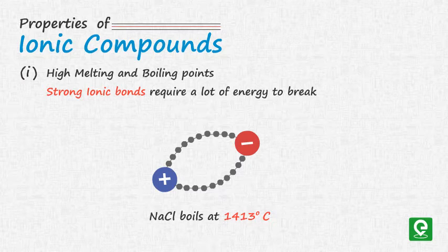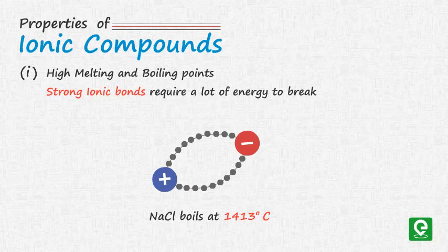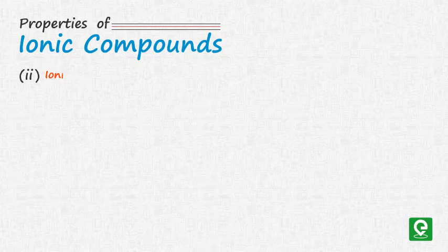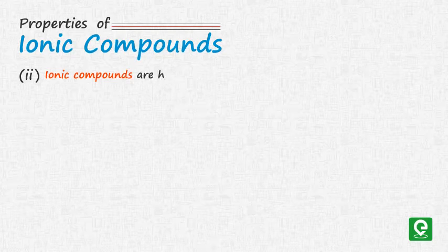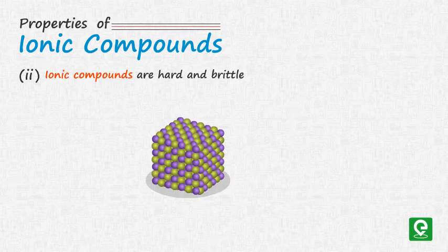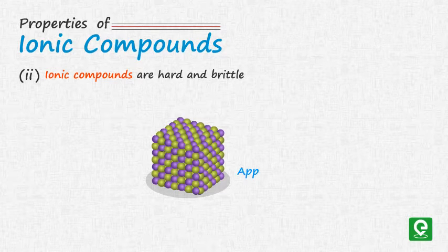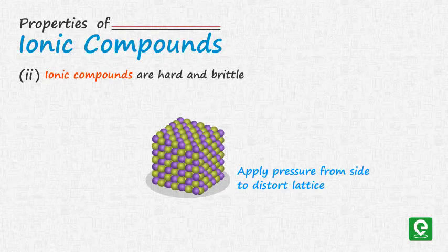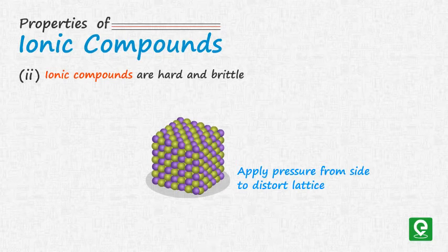For example, sodium chloride boils at 1413 degrees Celsius. Number two: ionic compounds have lattice structure and are very hard and brittle. Strong ionic bonds create crystals in rigid lattice structures. On applying pressure, the alignment of ions shifts, resulting in brittleness.